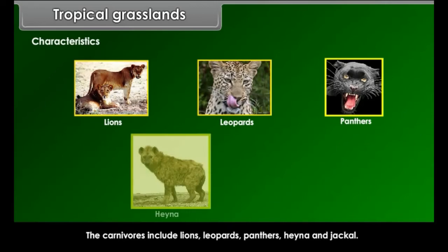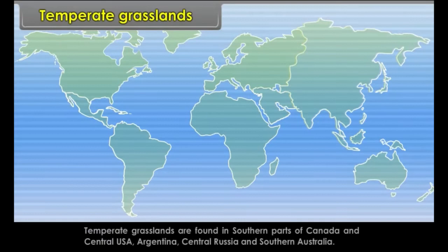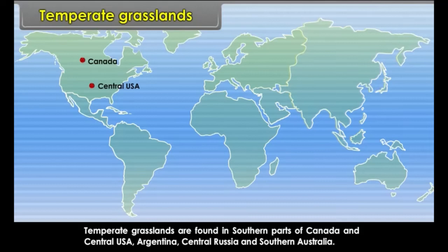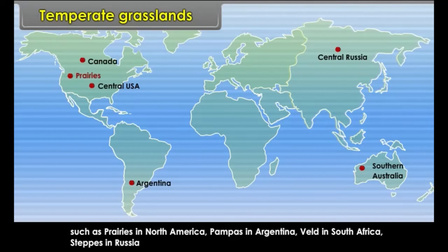Temperate grasslands are found in southern parts of Canada and Central USA, Argentina, Central Russia and Southern Australia. These grasslands are known by different local names: prairies in North America, pampas in Argentina, veld in South Africa, steppes in Russia and downs in Australia.